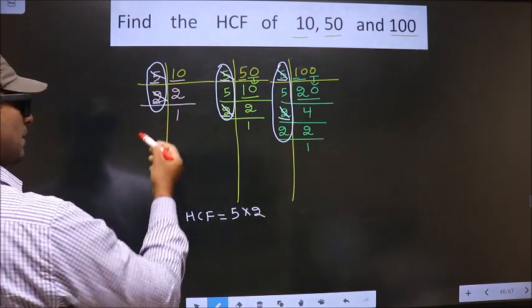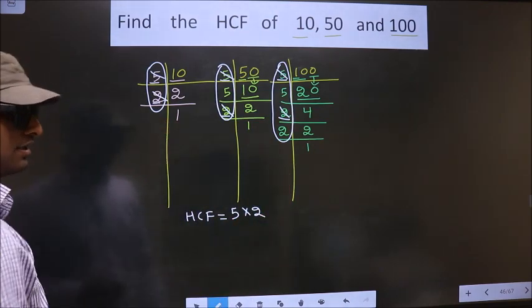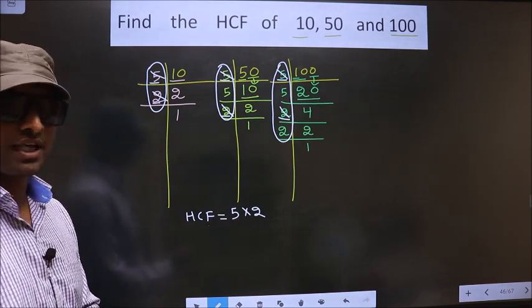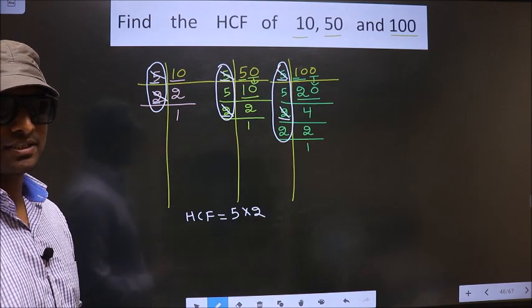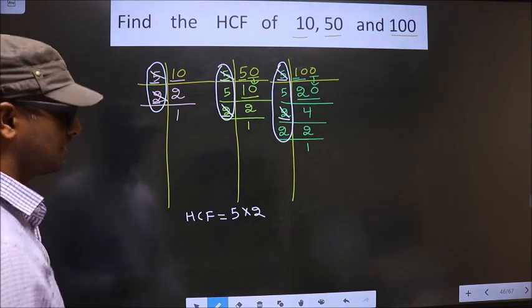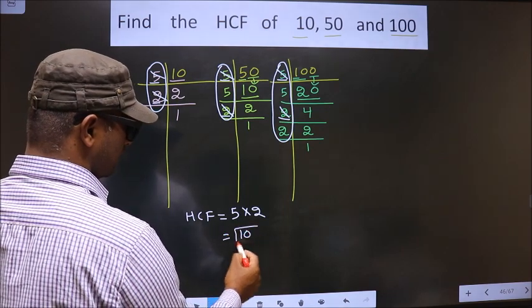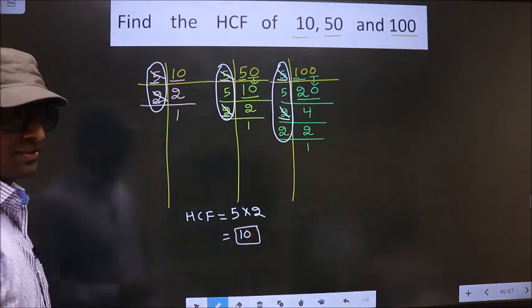No more numbers are left. Therefore, you multiply these numbers. Whatever number you get, that is your HCF. That is 5 times 2 is 10. So 10 is our HCF.